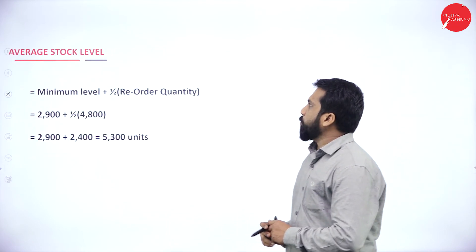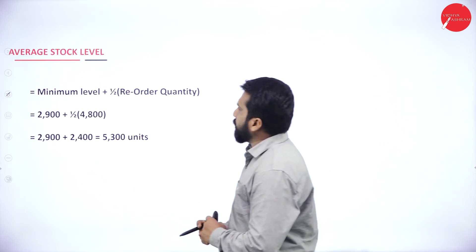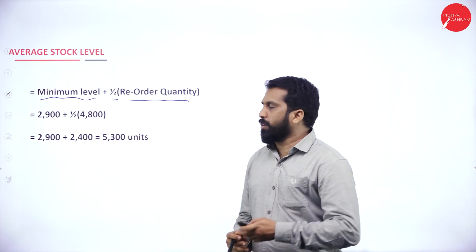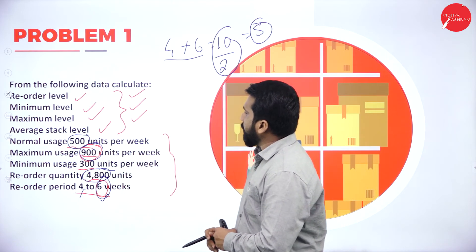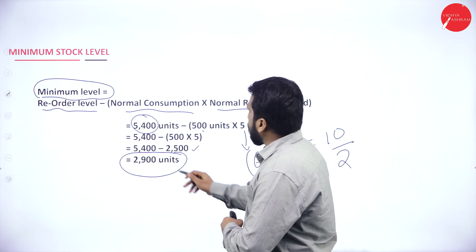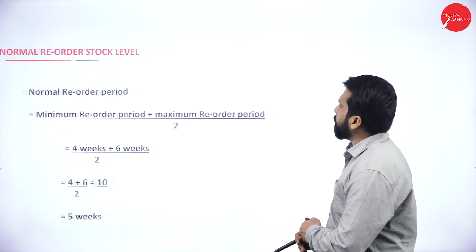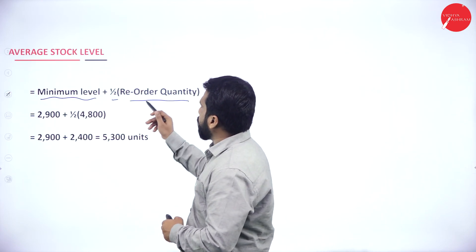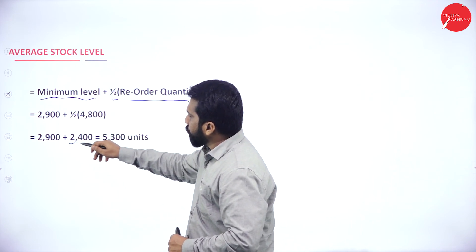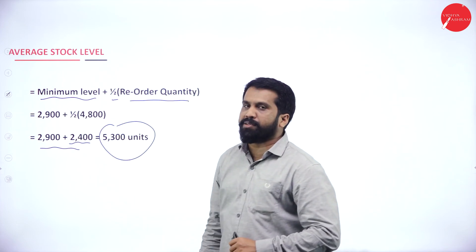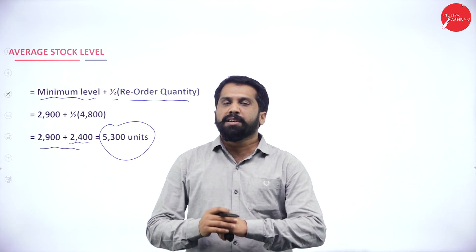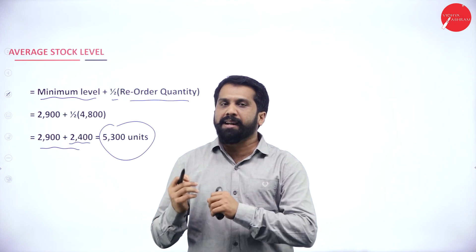The last one is average stock level. Formula: minimum stock level + half of reorder quantity. Minimum stock level is 2900. Reorder quantity is 4800, so half is 2400. Average stock level = 2900 + 2400 = 5300 units. More than explanation, just remember the formulas — if you can remember the formulas, 99% of the problem is done. Apply your mind and do this problem.